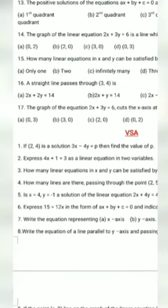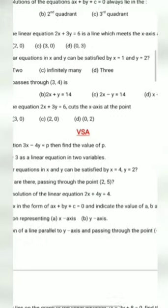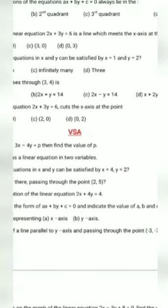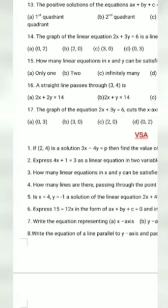Question 17: the graph of equation 2x plus 3y equal to 6 cuts the x-axis. Cutting the x-axis means y equal to zero. Looking at options B and C where y equal to zero, putting y equal to zero gives x equal to 3, so the point is (3, 0). Option B will be correct.